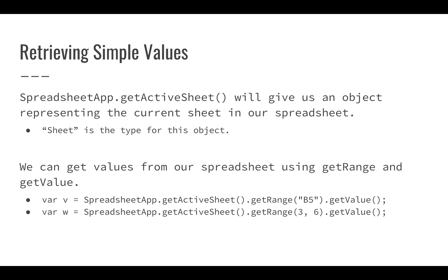We can also use coordinates to address cells. Passing in 3, 6 will give us the third row and the sixth column, which is cell F3. Note this doesn't start at zero — A is column one. So cell F3 would be row three, column six. SpreadsheetApp.getActiveSheet().getRange(3, 6) would give us the value of whatever is in F3.